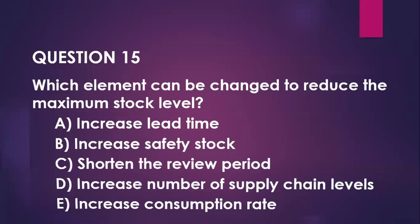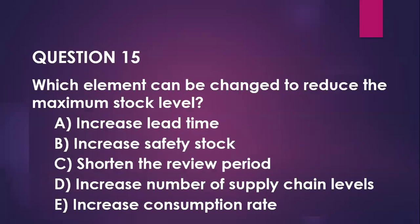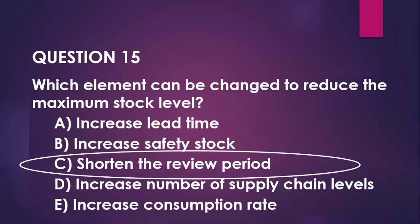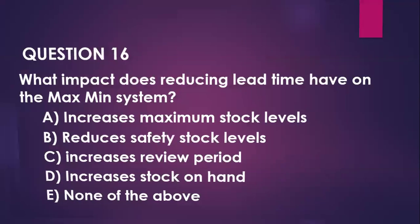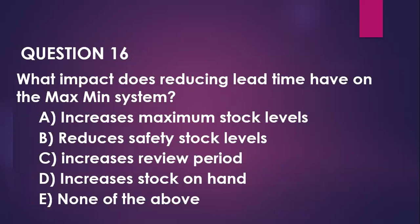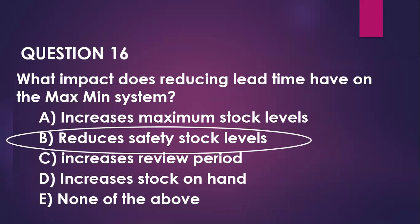Question number fifteen: which elements can be changed to reduce the maximum stock level? You can shorten the review period. Question sixteen: what impact does reducing lead time have on the max-min system? If you reduce lead time, most likely you're going to reduce safety stock levels; the review stock levels will also reduce, the maximum will also reduce, the minimum also reduces. So one thing leads to another.